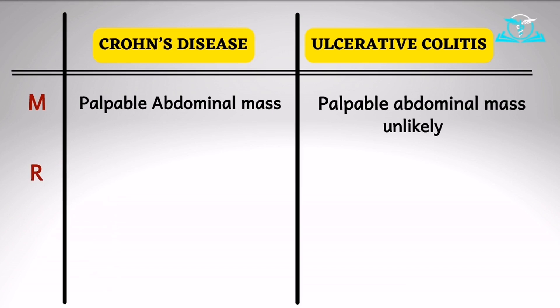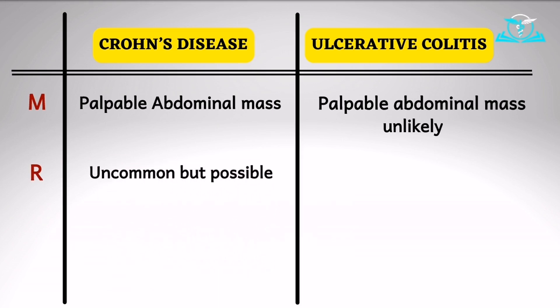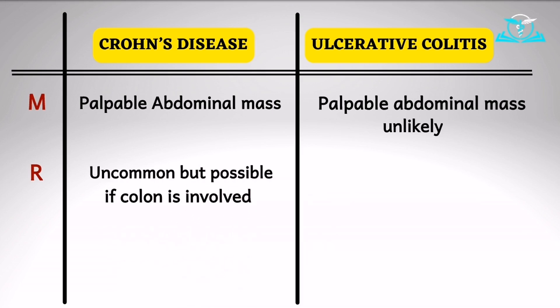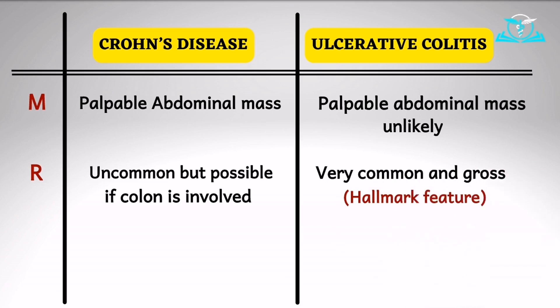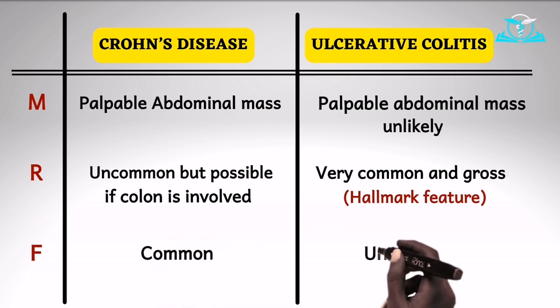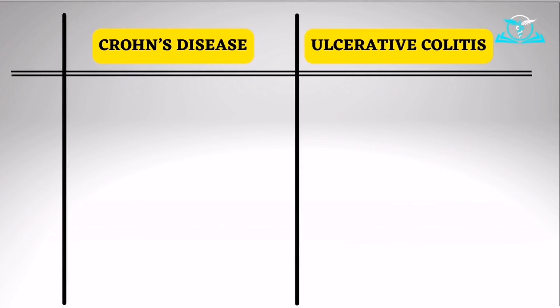R stands for rectal bleeding. Typically in Crohn's disease we don't find rectal bleeding, but it is possible if the Crohn's disease has involved the colon. Commonly, however, it does not cause rectal bleeding. In ulcerative colitis, rectal bleeding — which is typically bright red — is very common and gross, and that is actually the hallmark feature of ulcerative colitis. R speaks for ulcerative colitis more than for Crohn's disease. Then F for fever: it favors Crohn's disease. In Crohn's disease, fever is common, whereas in ulcerative colitis, fever is usually uncommon.